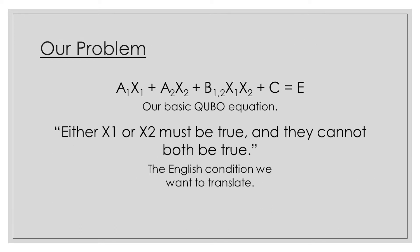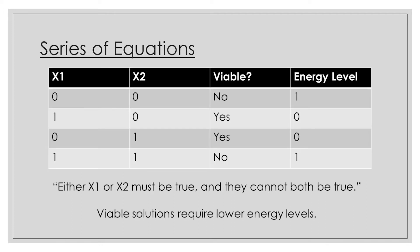So let's take our example here. We have our condition in English: either x1 or x2 must be true, and they cannot both be true. So let's take a look at the four possible combinations for x1 and x2 arrangements. You have one where both are set to 0, one where x1 is set to 1 and x2 is set to 0, one where x1 is set to 0 and x2 is set to 1, and the final combination where both x1 and x2 have a value of 1. So two of these possibilities fulfill our condition, and two of them don't.